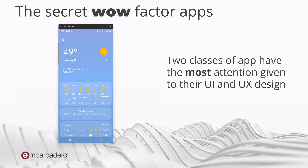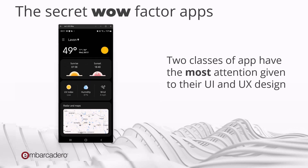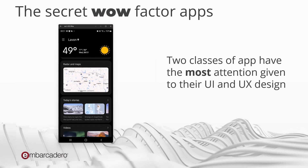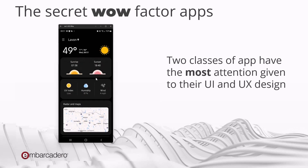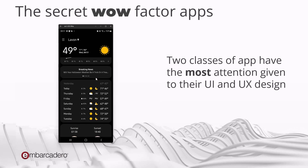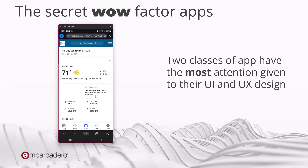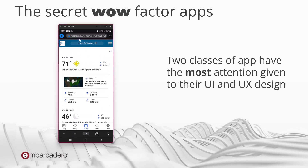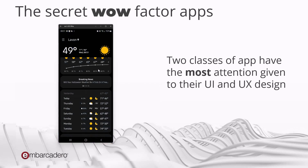Weirdly enough, the secret wow factor — there are two classes of apps that really get the most attention from companies like Microsoft, Apple, and Google when it comes to their own apps. That is the calculator apps and the weather apps. It seems the main reason they do that is to try out different user interface ideas, and then bundle them all together into the weather apps.